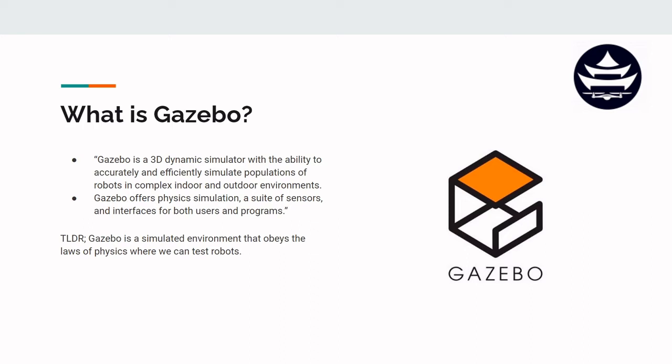But wait, there's more. Gazebo offers physics simulation, a suite of sensors — that's an important one — and interfaces for both users and programs. Basically, Gazebo is a simulated world that obeys the laws of physics, and this is where we can test robots or drones.